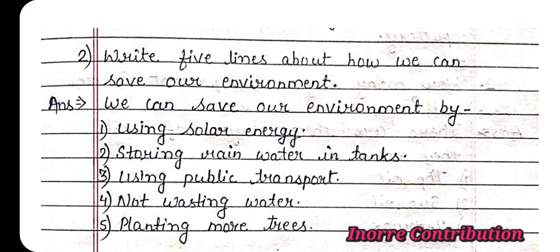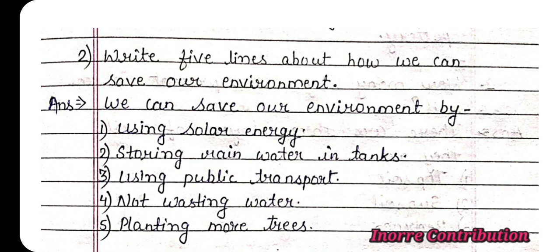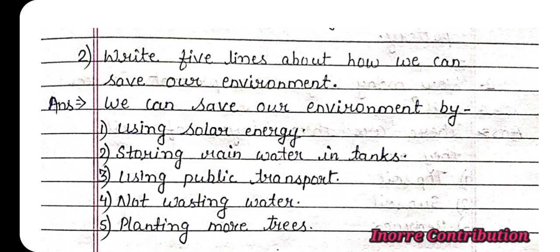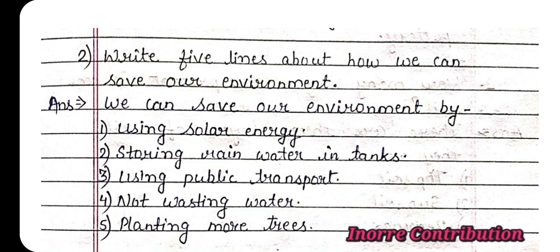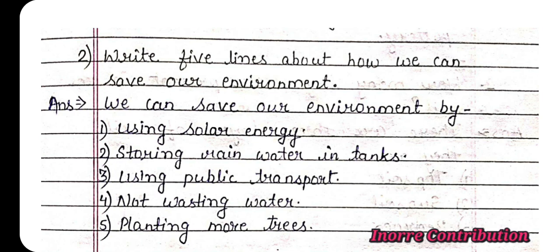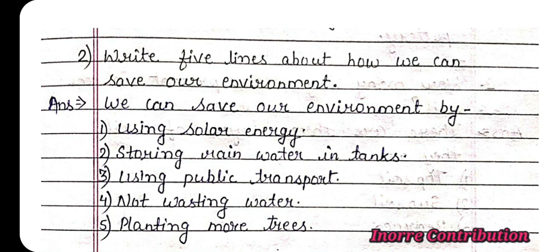Question two: Write five lines about how we can save our environment. Answer: We can save our environment by first using solar energy, second by storing rain water in tanks, third by using public transport, fourth by not wasting water, and fifth by planting more trees.